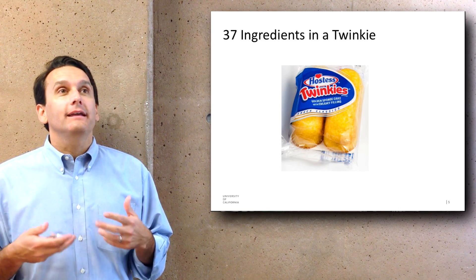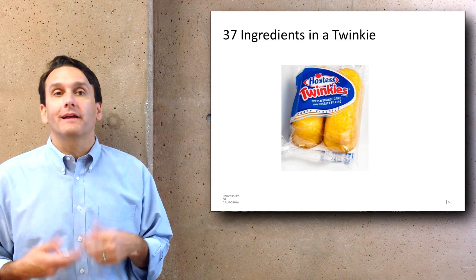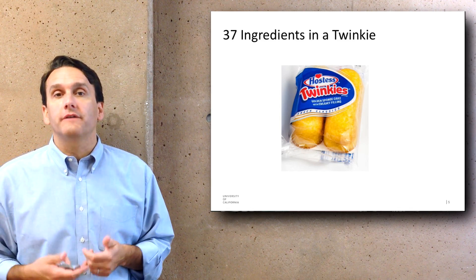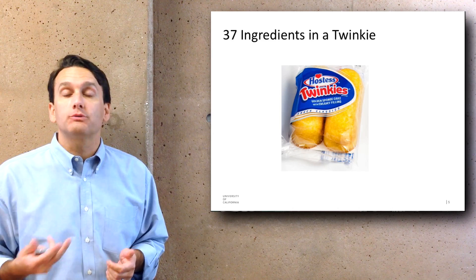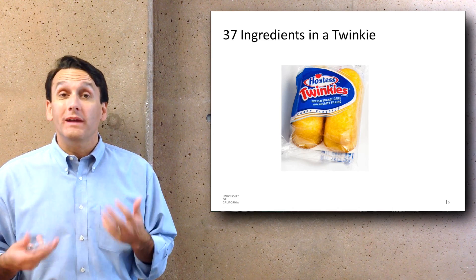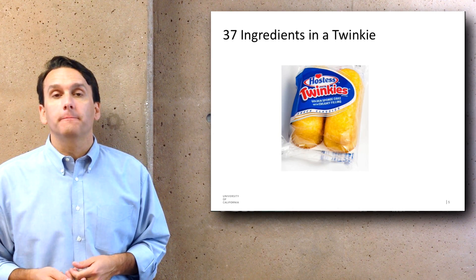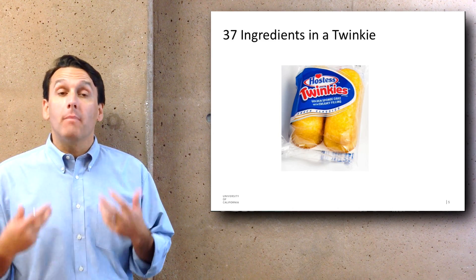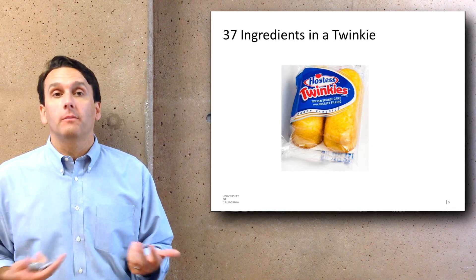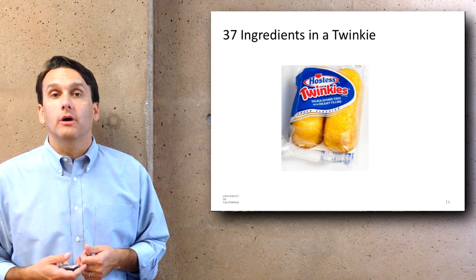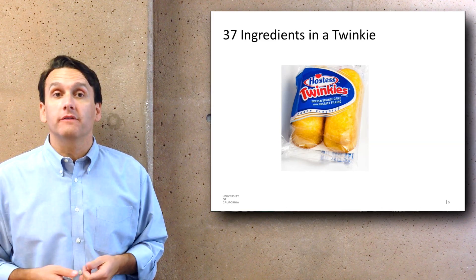The ingredients in a Twinkie are very different from the kinds of foodstuffs we had on the evolutionary landscape. When humans were evolving, we ate very different things than what we find in a Twinkie. Modern agriculture is very different from the kinds of food gathering that we evolved to be good at.